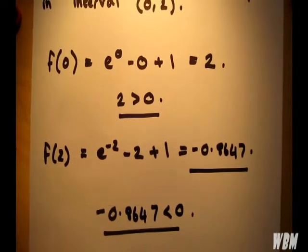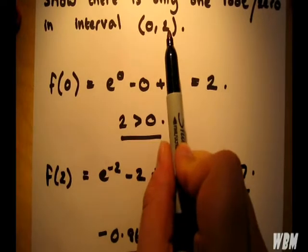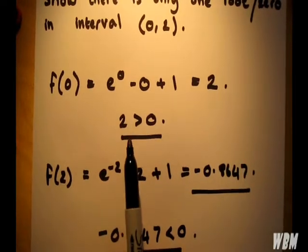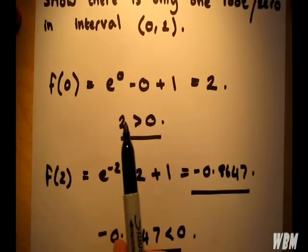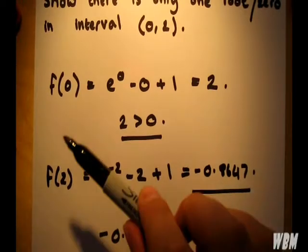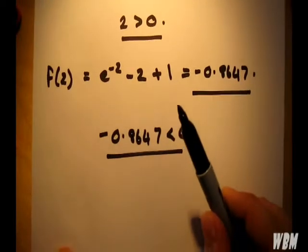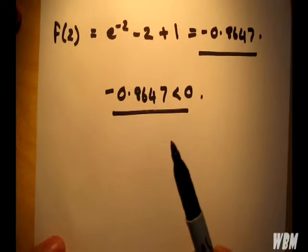What does this tell us? What it tells us is that over the interval, we start off at a positive and we end up at a negative. So it's going to be crossing the x-axis at some point. So if we draw a rough sketch of what I mean...